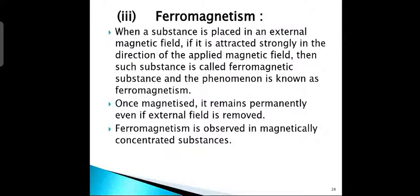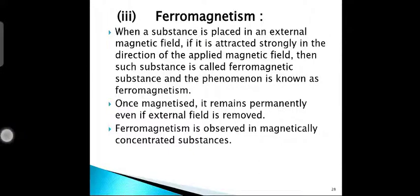Good morning, students. Today, let us continue from Ferromagnetism. What is Ferromagnetism? When we keep a substance in an external magnetic field, it is strongly attracted in the direction of the applied magnetic field. Then, that substance is called ferromagnetic substance and the phenomenon is known as Ferromagnetism.